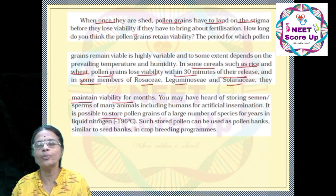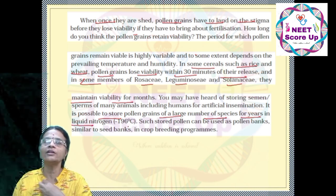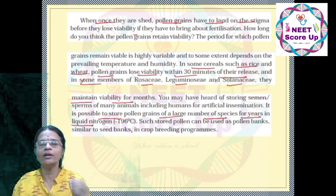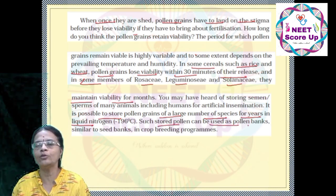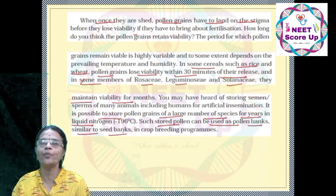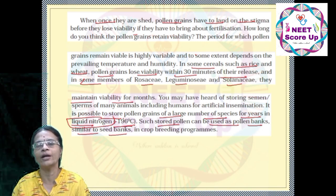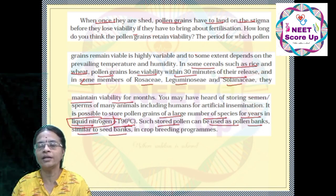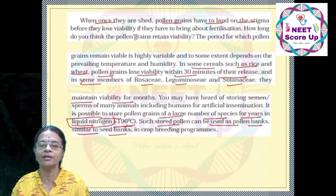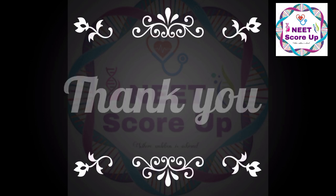It is possible to store pollen grains of a large number of species for years in liquid nitrogen. Stored pollen can be used as a pollen bank, similar to a seed bank. Liquid nitrogen is at minus 196 degrees centigrade.